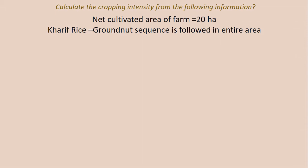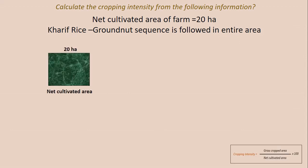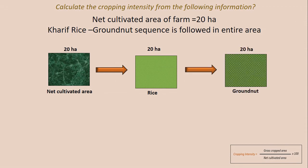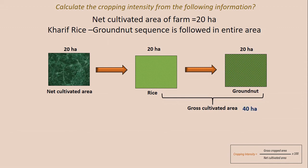Problem 4: Calculate the cropping intensity where the net cultivated area is 20 hectares and a rice-groundnut sequence is followed in the entire area. In kharif, rice was cultivated in 20 hectares, and in rabi season groundnut was cultivated in 20 hectares. So the gross cultivated area is 20 + 20 = 40 hectares. Using the formula: 40 ÷ 20 × 100 = 200%.